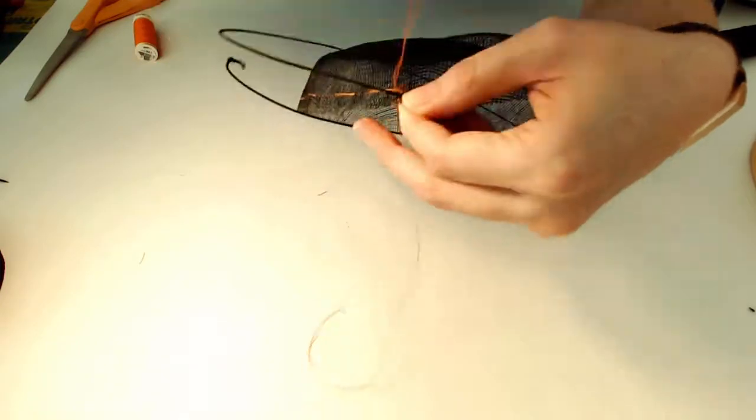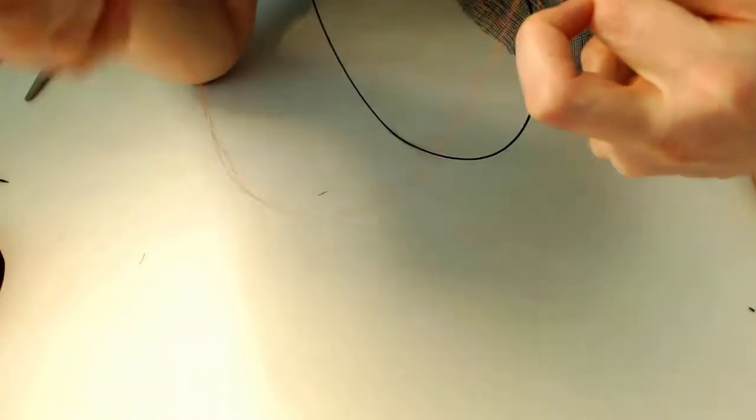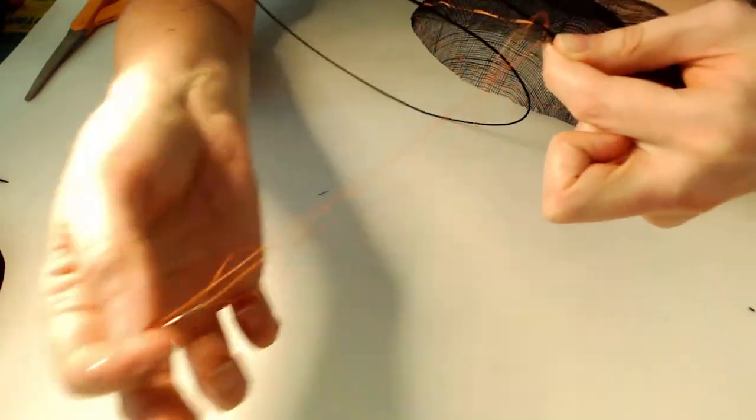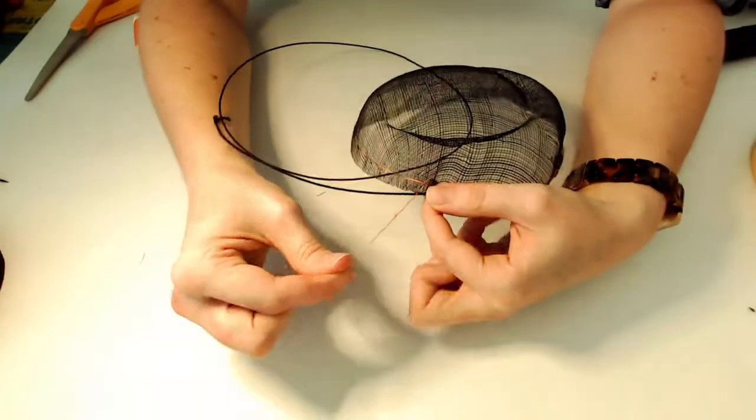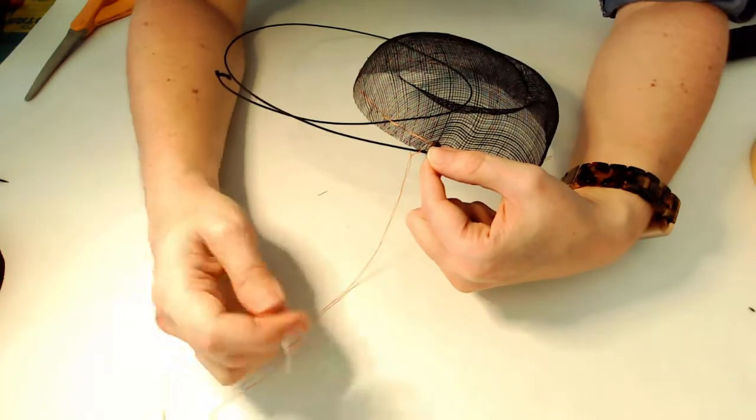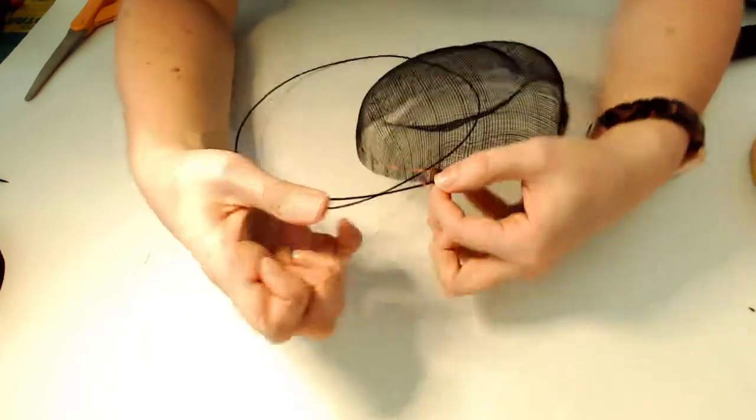And I'm going to pull through. But before I get too far, I'm going to put this needle through the loop. And that creates, that just holds the thread on and it won't come undone. So I don't have to anchor my knot. I can just put the needle through the loop of the knot and it'll hold it on.